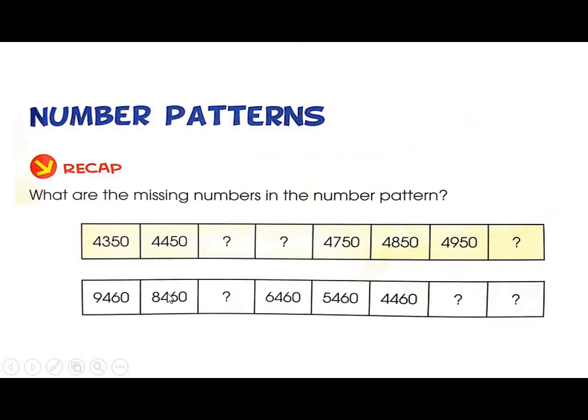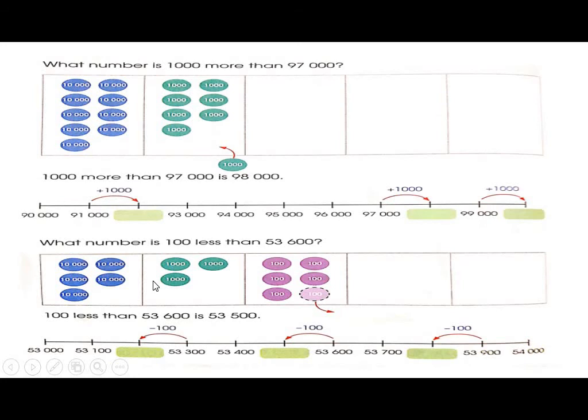9,000, 8,000, then 7,000. So 7,460, then 6,460, 5,460, 4,460, 3,460, 2,460. This is our next page.